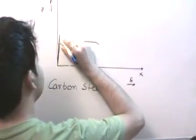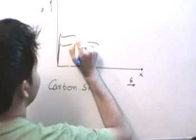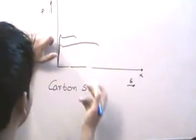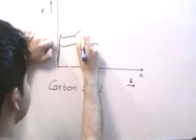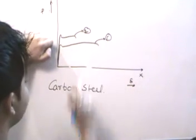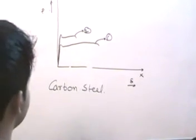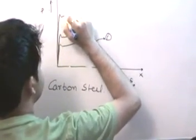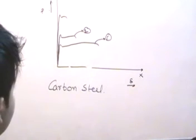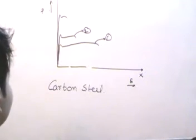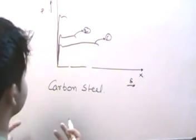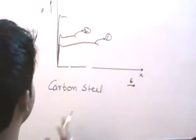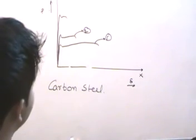As we increase the carbon content, the brittleness increases. The maximum stress the material can take increases from the first curve to the second curve, but the deformation it undergoes before collapse definitely decreases. If we take even higher values of carbon content, the maximum stress keeps increasing with increasing carbon content and brittleness, but the elongation the material undergoes before fracture keeps decreasing.